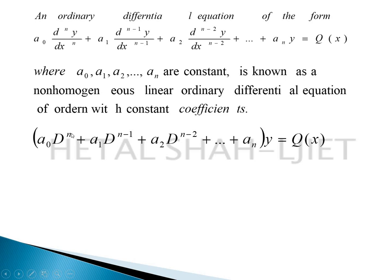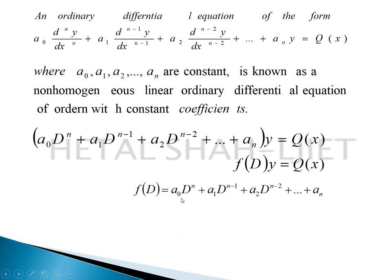It can be written as (a0 d^n + a1 d^(n-1) + ... + a_n) y = Q(x), or f(D)·y = Q(x), where f(D) = a0 d^n + a1 d^(n-1) + ... + a_n, and D is the differential operator d/dx. This equation is known as non-homogeneous because its right hand side is non-zero — it is a function of x.